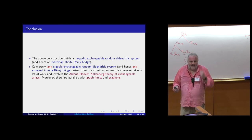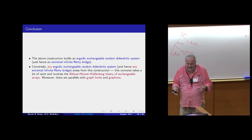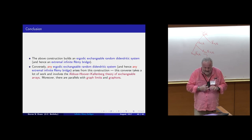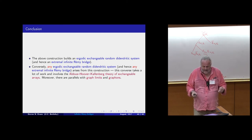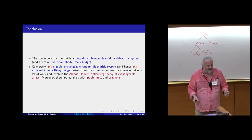I've only told you about a quarter of the story in terms of the work involved. The remarkable thing — if one can apply the adjective remarkable to one's own papers — is that this is the only game in town. This is a complete description of all of the ergodic exchangeable random digendritic systems, and hence all of the extremal infinite Rémy bridges. This is where the connection with Aldous-Hoover-Kallenberg, and the parallels with graph limits and graphons, come in. Sorry for going a little over time — thank you.